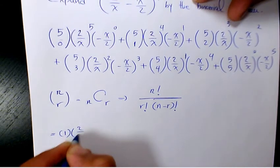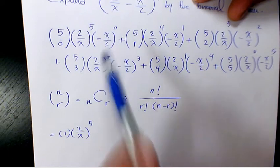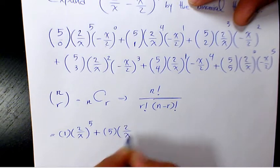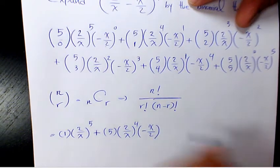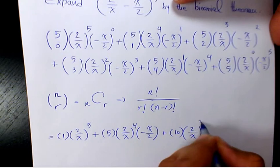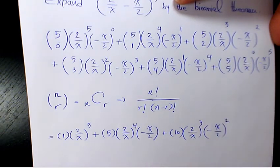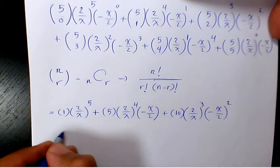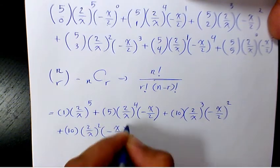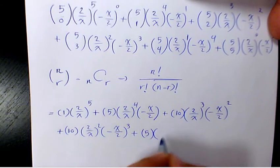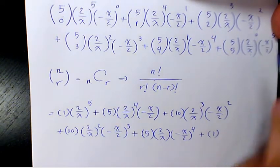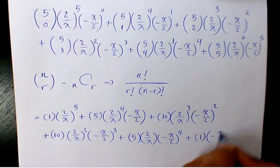So that's going to be: 1 times 2 over x to the power of 5 times negative x over 2 to the power of 0, plus 5 times 2 over x to the power of 4 times negative x over 2, plus 10 times 2 over x to the power of 3 times negative x over 2 to the power of 2, plus 10 times 2 over x to the power of 2 times negative x over 2 to the power of 3, then 5 times 2 over x times negative x over 2 to the power of 4, plus 1 times negative x over 2 to the power of 5.